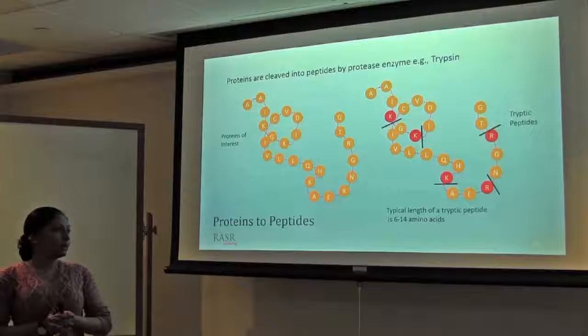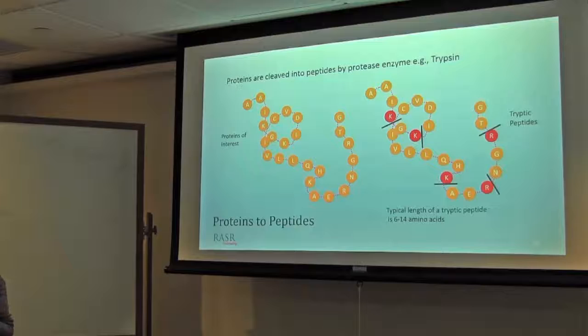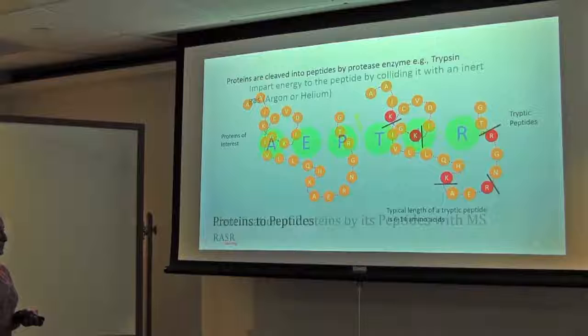The typical length of a tryptic peptide is going to be 6 to 14 amino acids, but again, it depends. If it is a very basic protein, meaning more lysine and arginine is going to be there, so more or smaller peptides we are going to get.